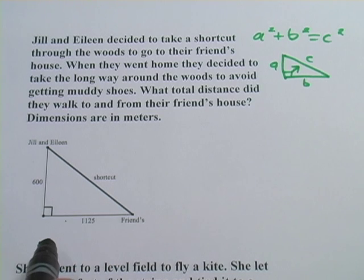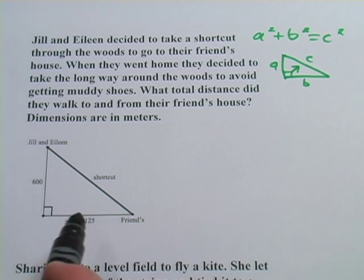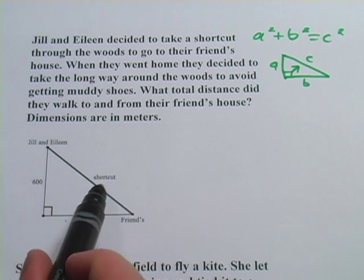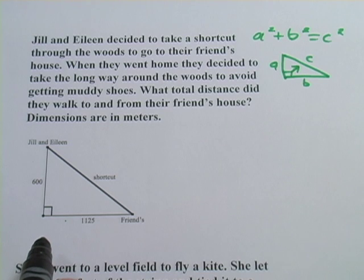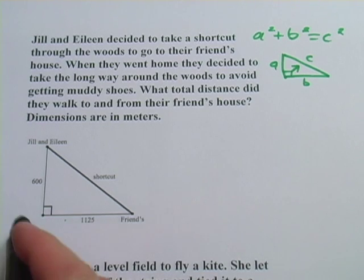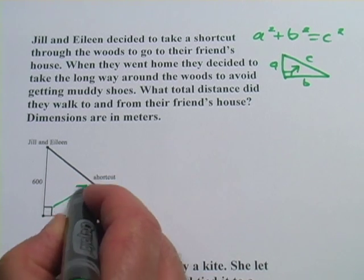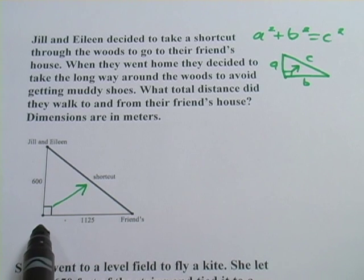So this is a good application for the Pythagorean theorem. We've got a triangle, we've got a right angle right here, and we're looking for one of the sides. So the first question to ask yourself is, which side is this that we're looking for? Is that a or b or c? Well, you should say it's c because it's the side that's opposite the right angle.